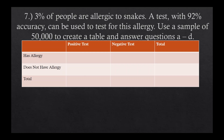We're going to use this example: 3% of people are allergic to snakes. A test with 92% accuracy can be used to test for this allergy. We'll use a sample of 50,000 to create a table. Our overall total is 50,000 — that's our starting point. We always want to start with an overall total. From there, we want to fill out the rest of the column.